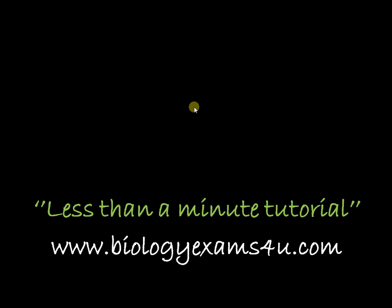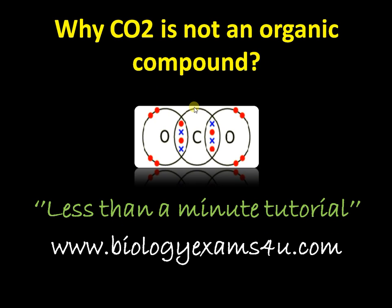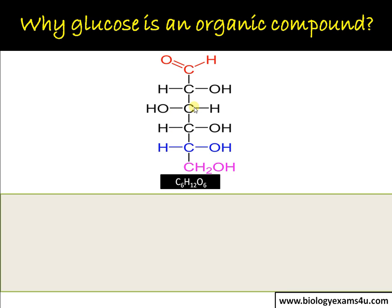Hi friends, in this tutorial we are going to discuss about why carbon dioxide is not an organic compound. First of all, start with glucose. This is the structure of glucose. Glucose is having the structural formula C6H12O6. An organic compound is a compound that contains carbon atoms.